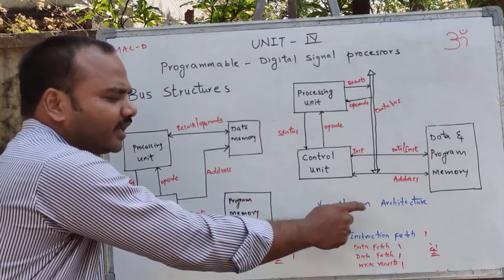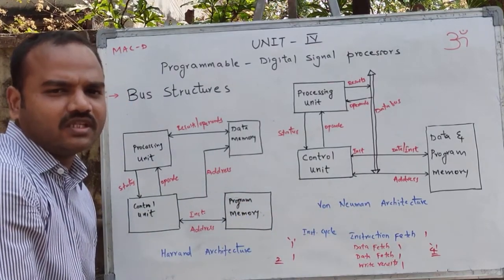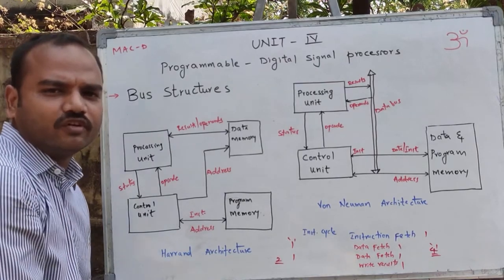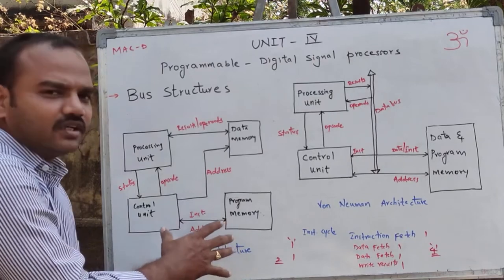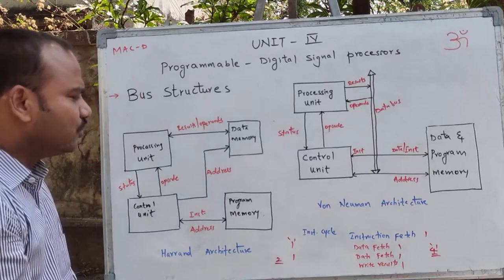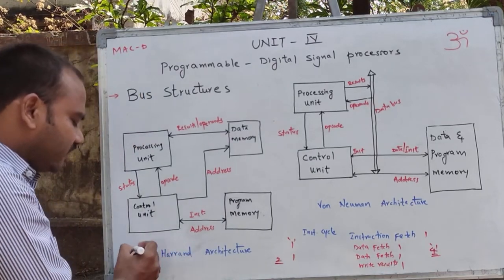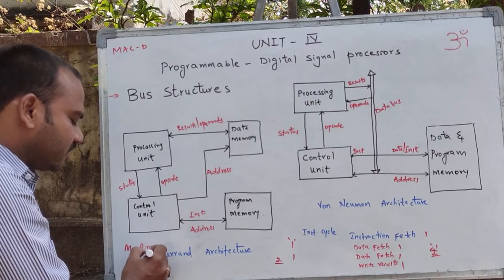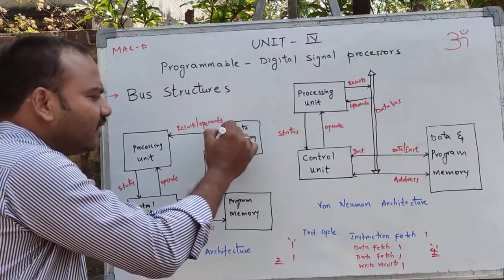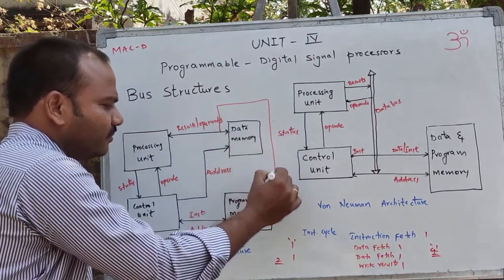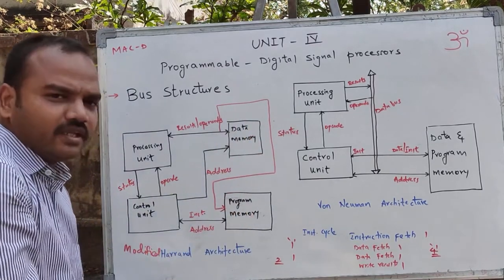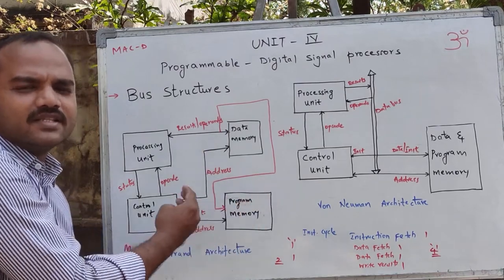Von Neumann architecture is therefore not used for digital signal processors, whereas Harvard architecture is. To further increase speed and reduce clock cycles from two to one, there is another architecture called Modified Harvard architecture. In Modified Harvard architecture, an additional separate data line from data memory to program memory allows access to three data elements simultaneously.